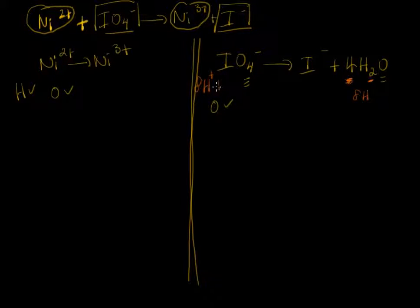Next what we want to do is balance the charge. We have a plus 2 here and we have a plus 3 here. We add electrons to the more positive side. Electrons are negative so it's going to lower that value, so we add one electron.